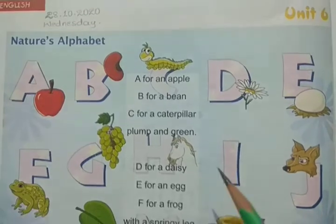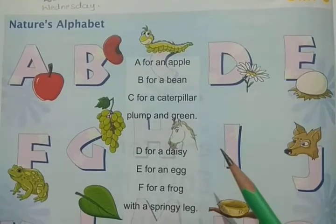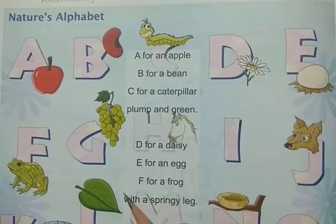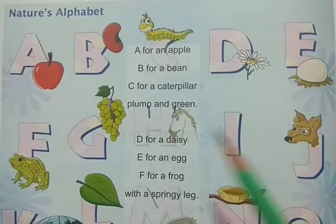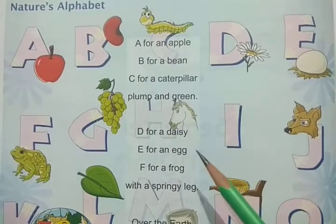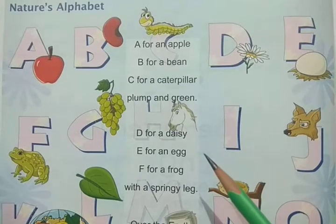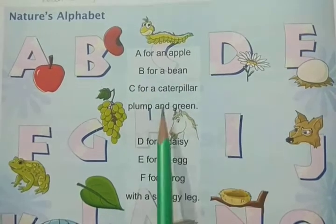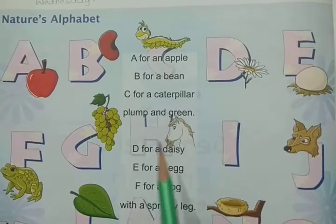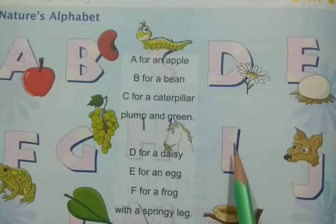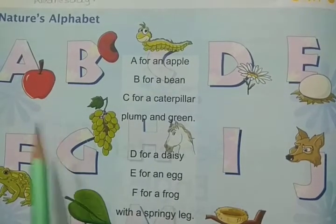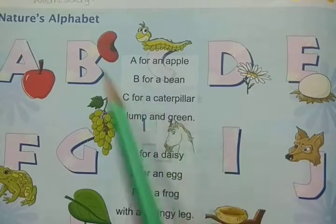The title of the poem itself tells us this poem is about nature and alphabet. See the poem here — the poet Tony Milton is explaining nature with the alphabet, A to Z. So he is explaining nature with these alphabets.